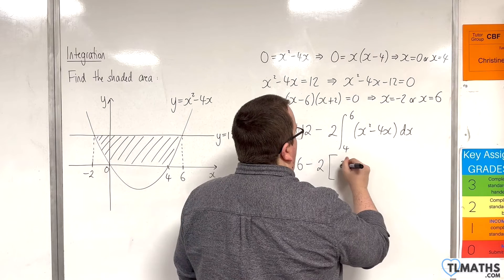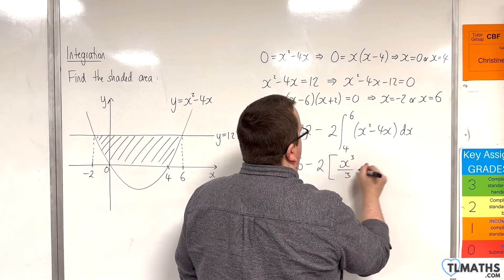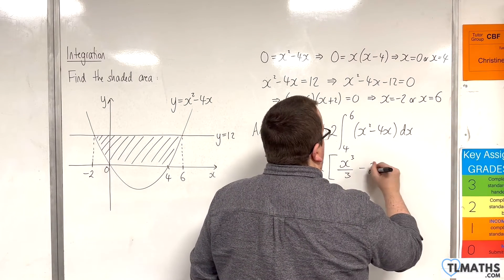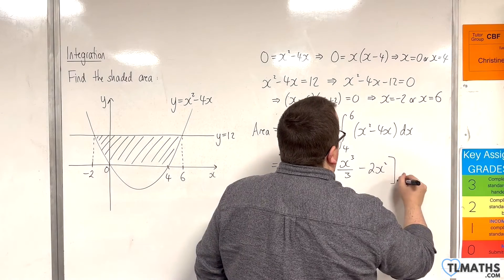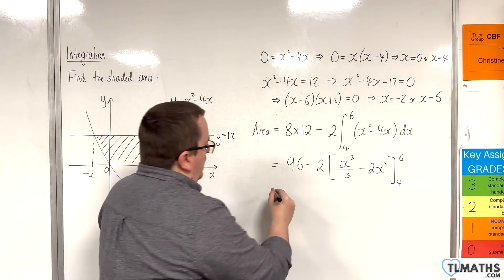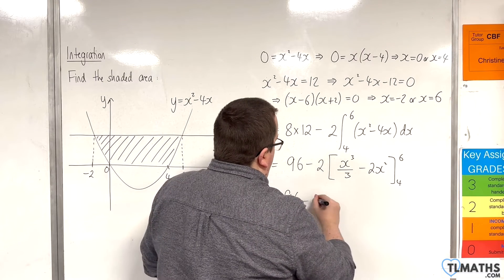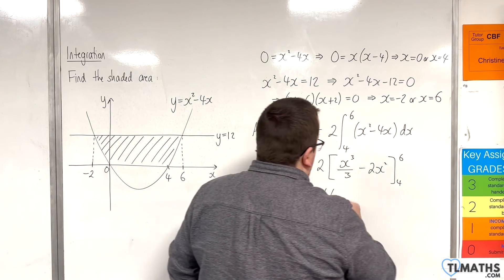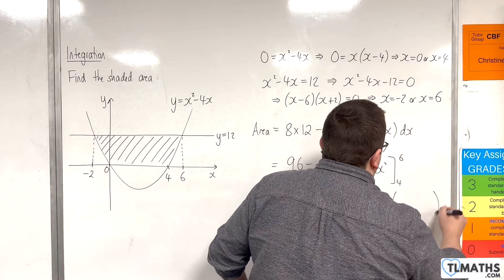And then take away two lots of, so add 1 to the power, divide by the new power, so x cubed over 3, take away 2x squared. Evaluate it between 4 and 6. So we have our 96, take away two lots of, open up brackets ready to substitute in.